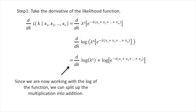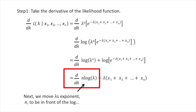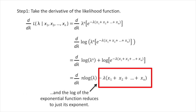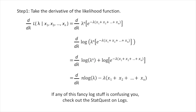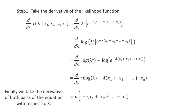Since we are now working with the log of the function, we can split up the multiplication into addition. Next, we move lambda's exponent, n, to be in front of the log. And the log of the exponential function reduces to just its exponent. If any of this fancy log stuff is confusing you, check out the StatQuest on logs. Finally, we take the derivative of both parts of the equation with respect to lambda.